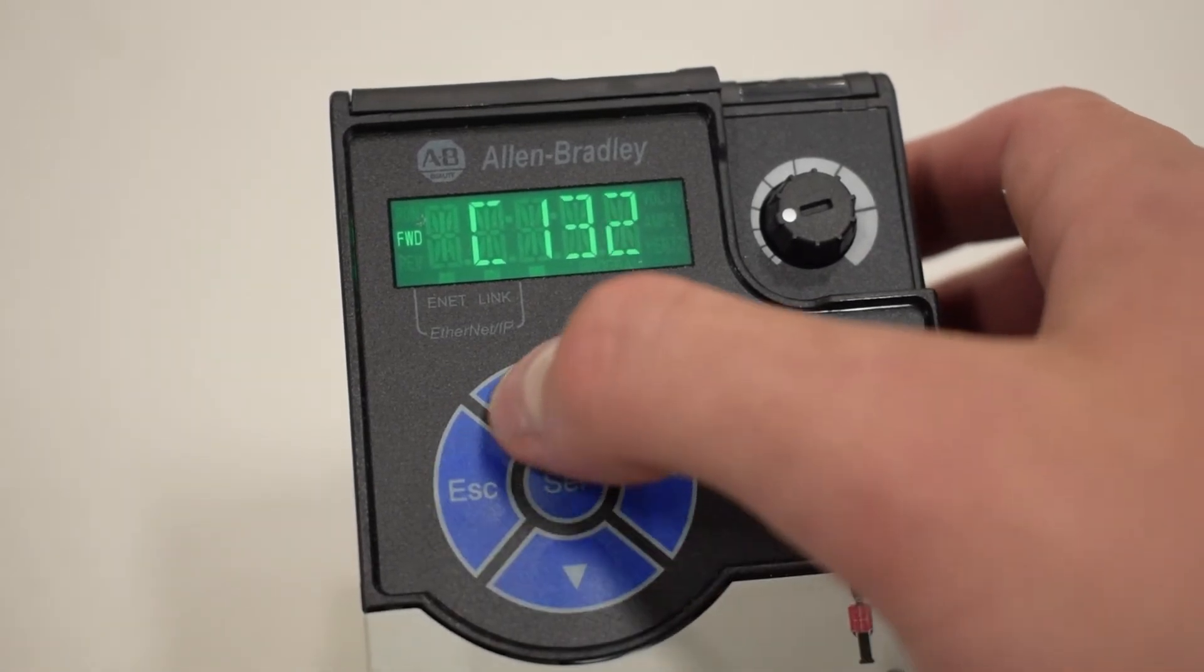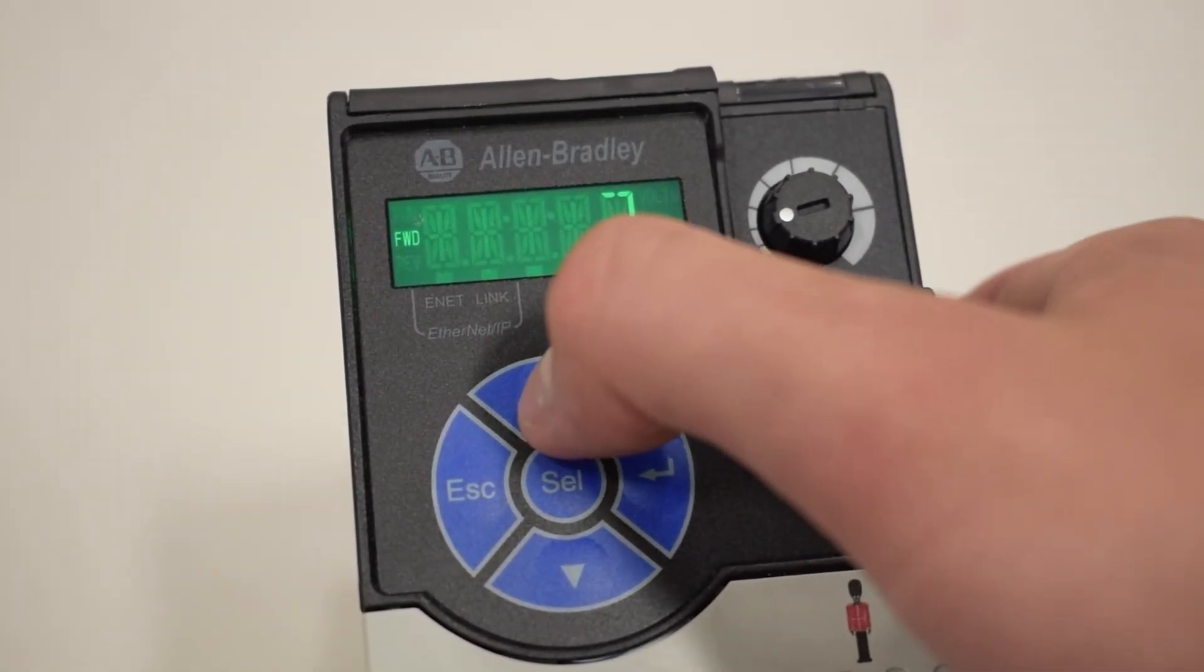Next, change the subnet mask through parameters C133 through C136.